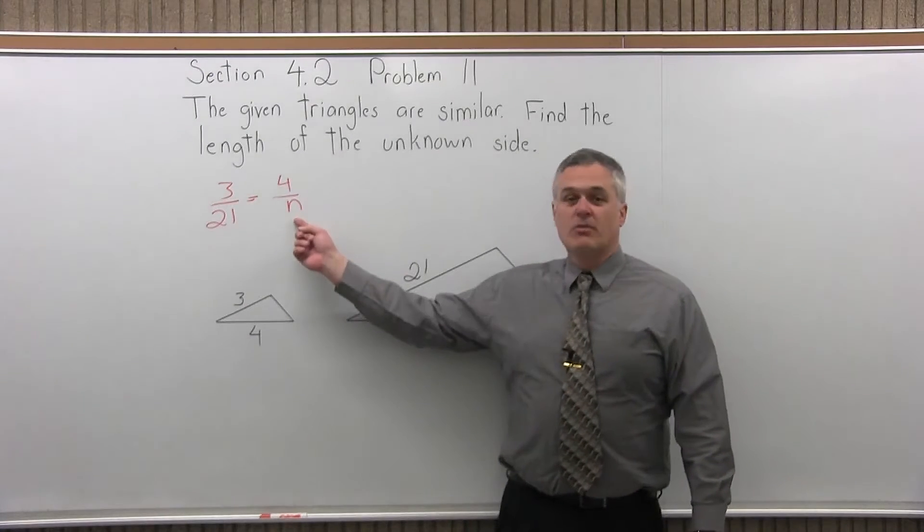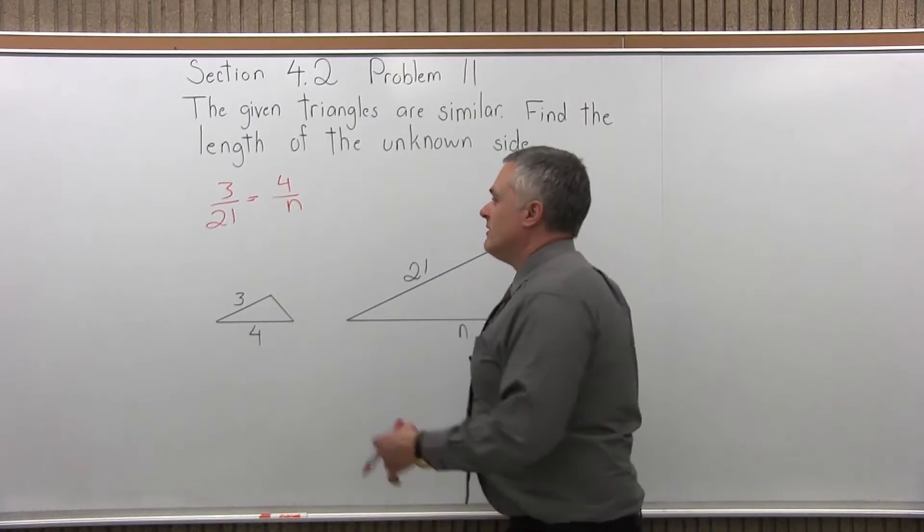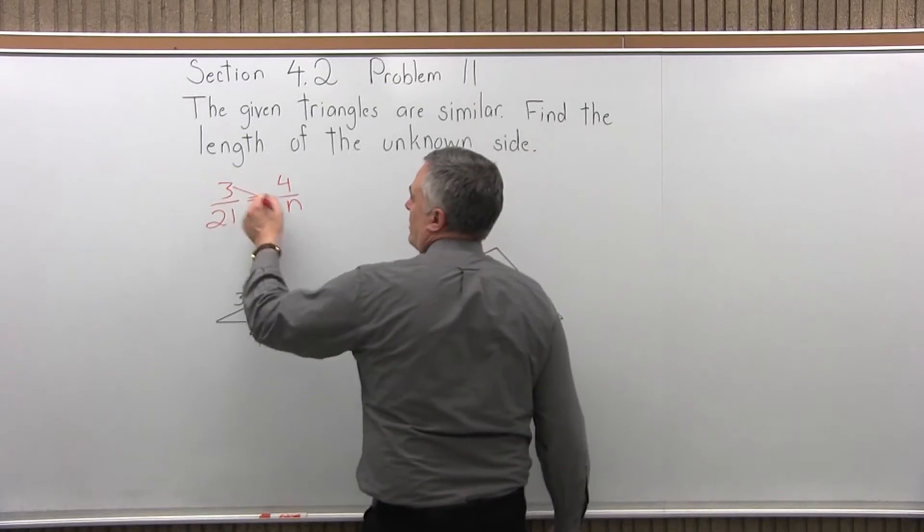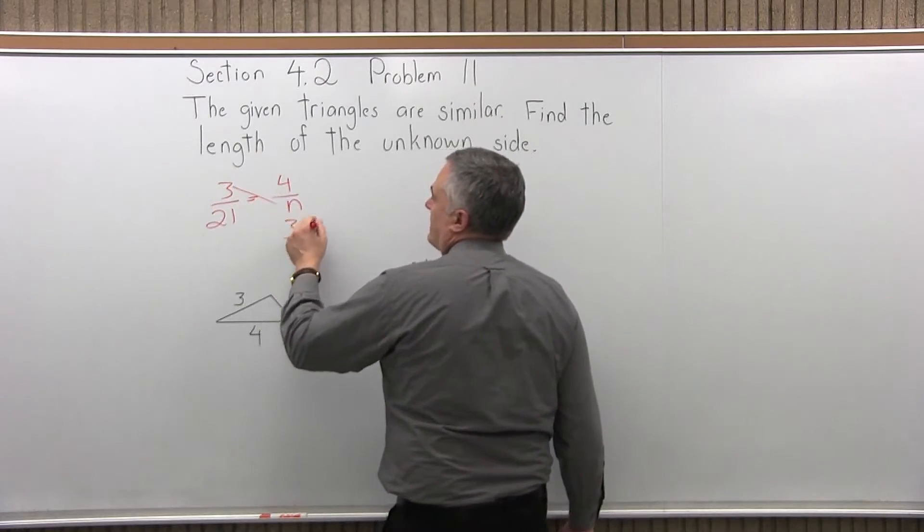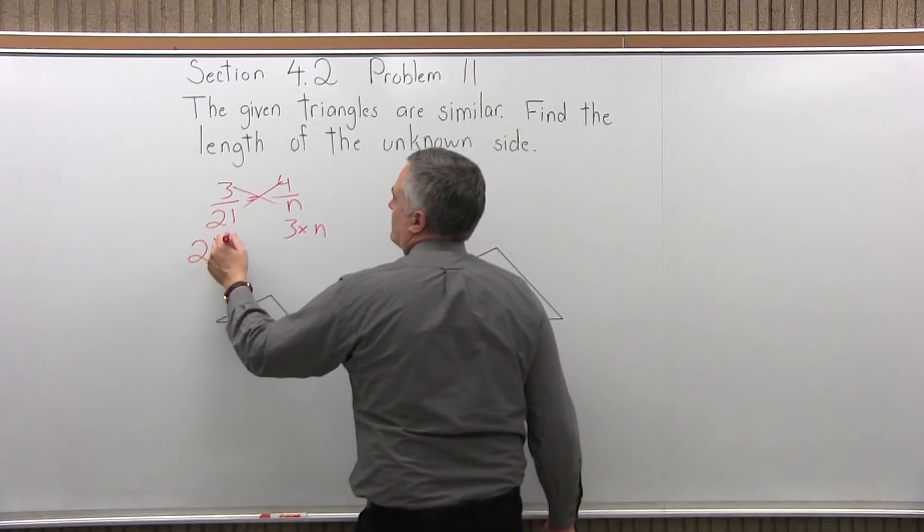When you have an unknown part, what you do is you cross multiply and divide by the value in front of the unknown. So one way you're going to do 3 times N, and the other way, 21 times 4.